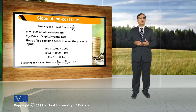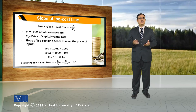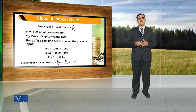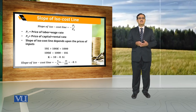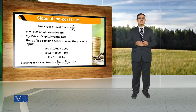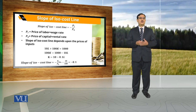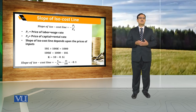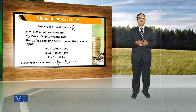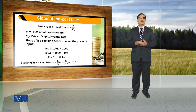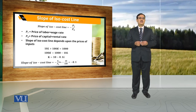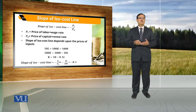Price of labor को हम wage rate कहते हैं that prevails in the market, while price of capital is the rental rate that prevails in the market. Labor को हम horizontal axis पे लेते हैं और capital को vertical axis पे — तो slope of isocost line is equal to minus PL over PK.